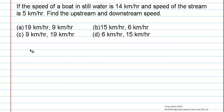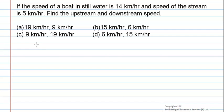If the speed of a boat in still water is 14 kilometers per hour and the speed of the stream is 5 kilometers per hour, then find the upstream and downstream speed. The options are: 19 and 9 kilometers per hour, 15 and 6 kilometers per hour, 9 and 19 kilometers per hour, or 6 and 15 kilometers per hour.